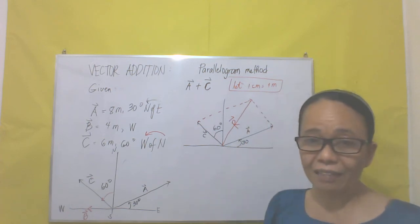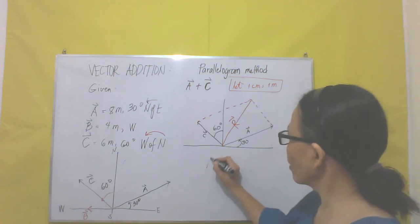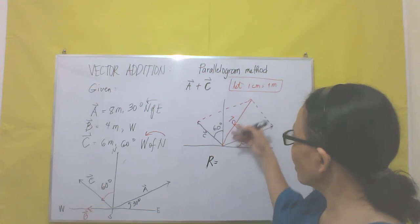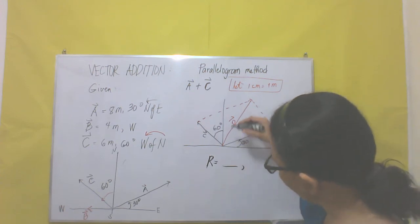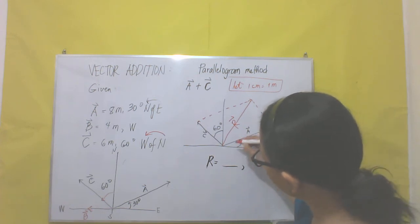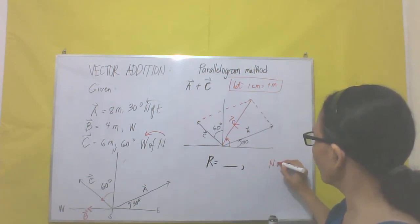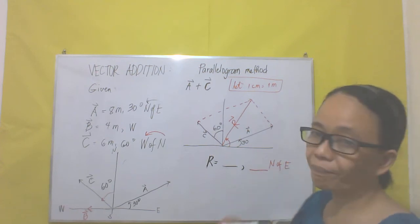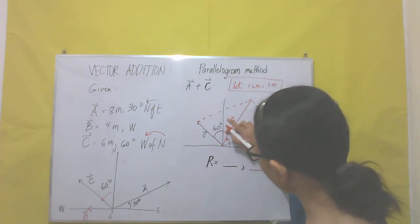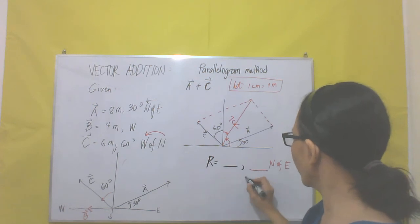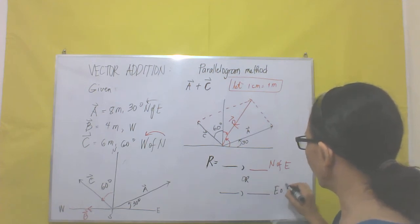Next, how about the angle — the direction? The magnitude R would be the length of the diagonal, and your direction can be measured from this angle. That direction is north of east, or this angle gives you east of north.